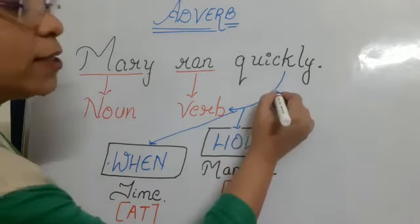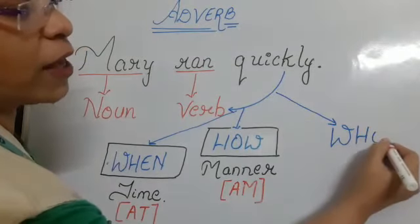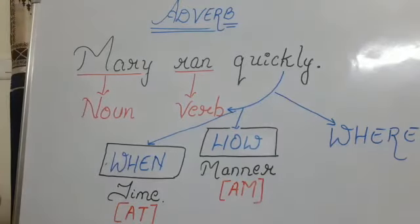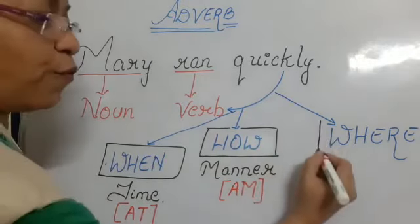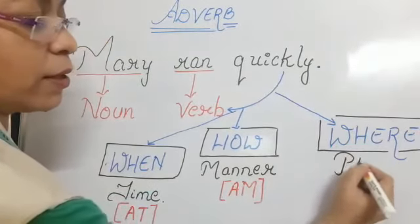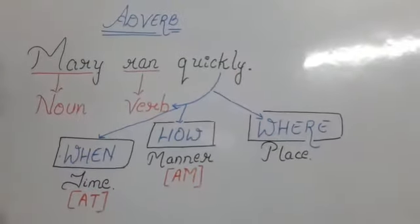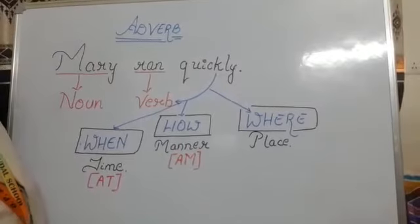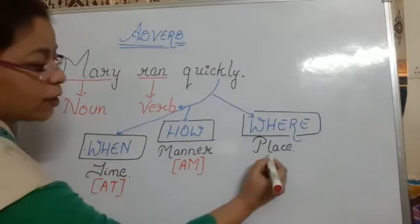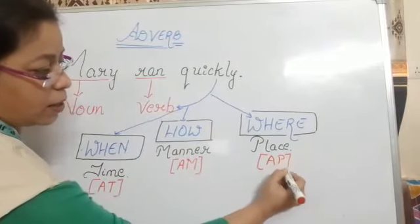Yes, it is where. Where the action, where the verb has been done. It is showing the place of the action being done. The place of an action being done. So it can also be called as A-P.